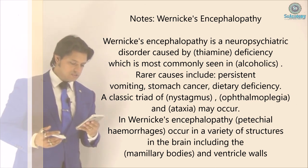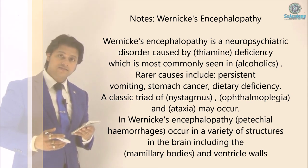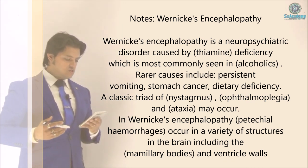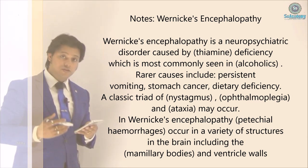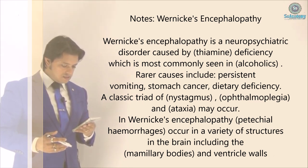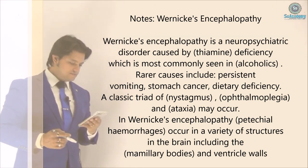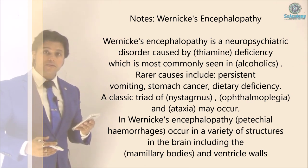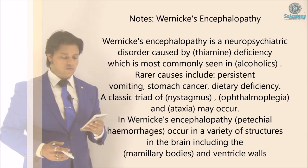Other real causes include persistent vomiting, stomach cancer, and dietary deficiency. The classic triad is nystagmus, ophthalmoplegia, and ataxia — circle each of these. Petechial haemorrhages occur in a variety of structures in the brain, including the mammillary bodies and ventricular walls — circle both.